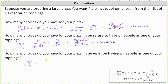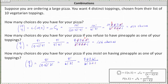9 choose 3 equals 9 factorial divided by the product of (9 minus 3) factorial and 3 factorial, which equals 9 factorial divided by the product of 6 factorial and 3 factorial. Simplifying: 9 factorial equals 9 times 8 times 7 times 6 factorial, divided by 6 factorial and 3 factorial, where 3 factorial equals 3 times 2 times 1. Again, 6 factorial divided by itself simplifies to 1.